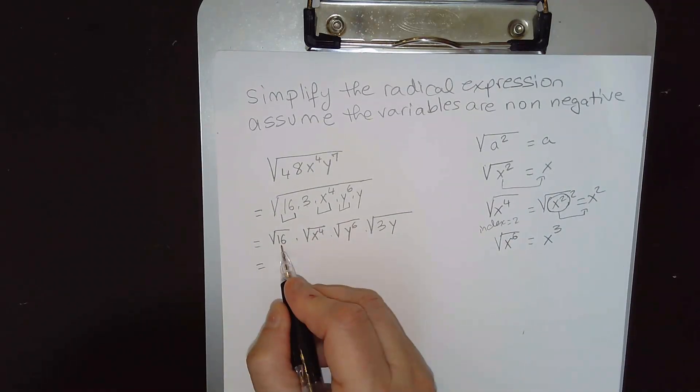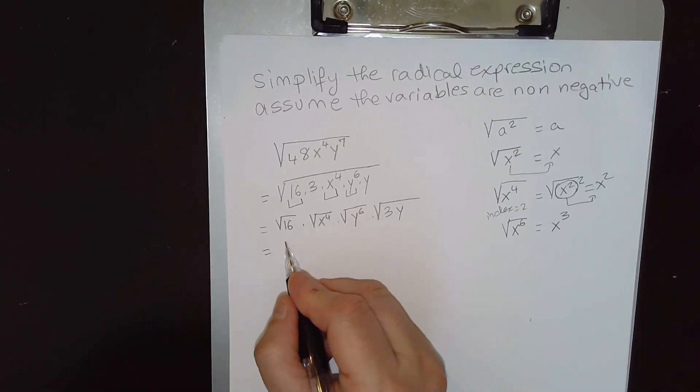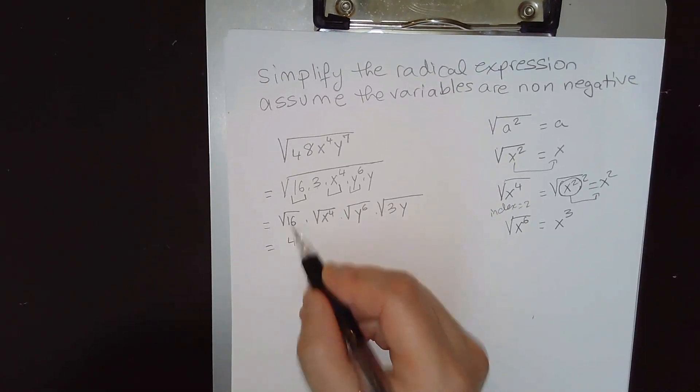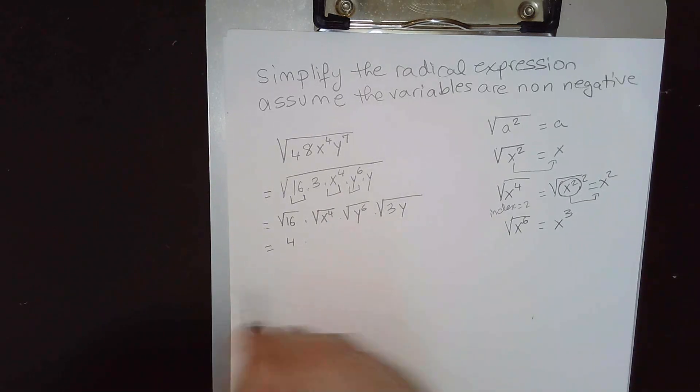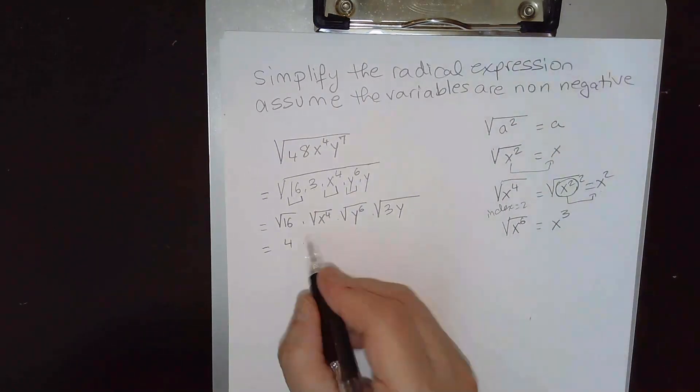So square root of 16 is 4, no, that's 4 squared is 16, times square root of x⁴, x⁴, we just did this here, is x².